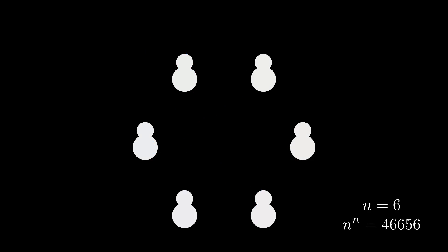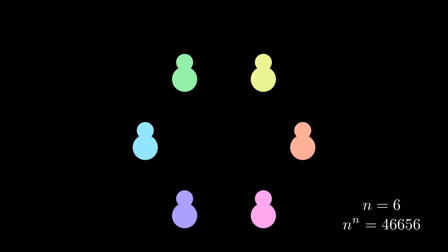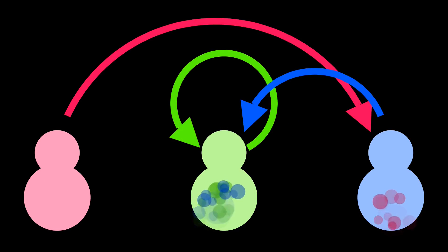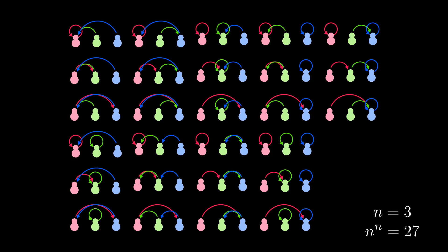Better yet, let's make them paint balloons so the colors are distinguishable. Now, n to the n counts the number of ways that n children can each throw one balloon at each other, or themselves. The set of all such possible paint balloon fights is the target set we are trying to inject into. There are n children and n targets for each of them to aim at, so that's n to the n ways.